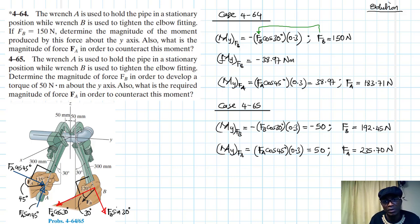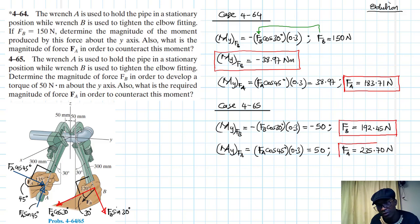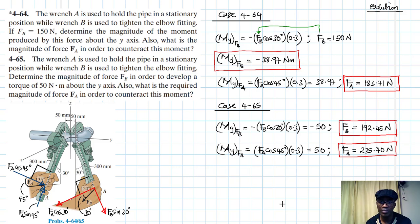To summarize: in case one, we found the moment produced by force FB, then found force FA to counteract that moment. In case two, the moment was given and we found the force FB that produces that particular torque, then found FA to counteract the moment produced by FB. I hope the video was helpful — give it a thumbs up, keep subscribing and liking the channel. See you in the next screencast!